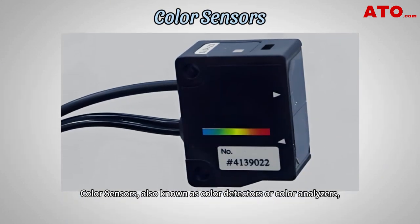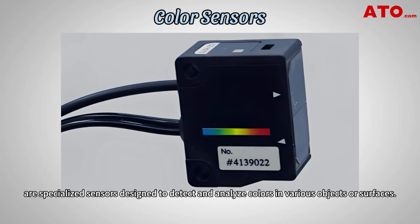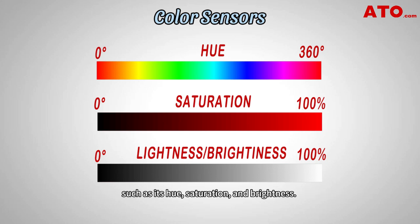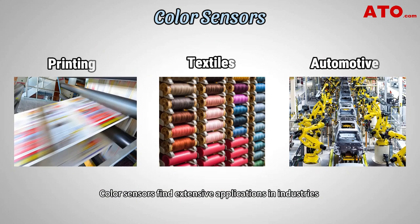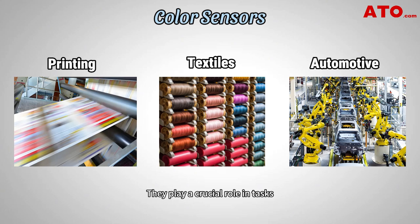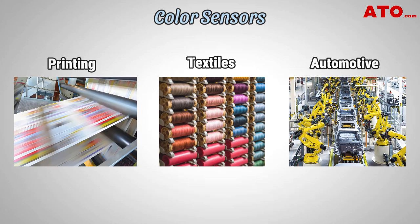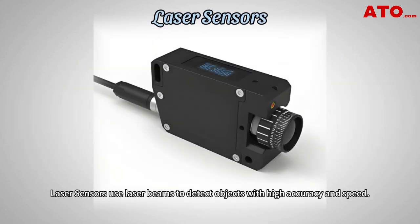Color sensors, also known as color detectors or color analyzers, are specialized sensors designed to detect and analyze colors in various objects or surfaces. They can accurately identify and measure the color properties of an object, such as its hue, saturation and brightness. Color sensors find extensive applications in industries such as printing, textiles, automotive and quality control, playing a crucial role in tasks like color matching, color sorting and ensuring consistent color output in manufacturing processes.